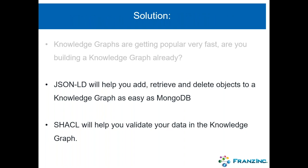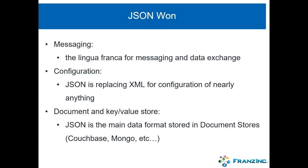The simple solution we find is that JSON-LD will help you add, retrieve, and delete objects from a knowledge graph as easily as MongoDB. And then you can use a new solution called SHACL which will help you validate your data in a knowledge graph. There are already several companies taking this strategy — for example, a company called 10Force is doing all the linked data strategies for the Belgian government, using JSON-LD for all data input/output and SHACL for data validation.